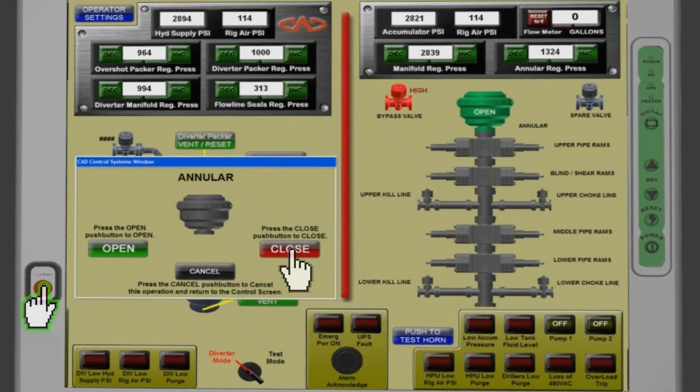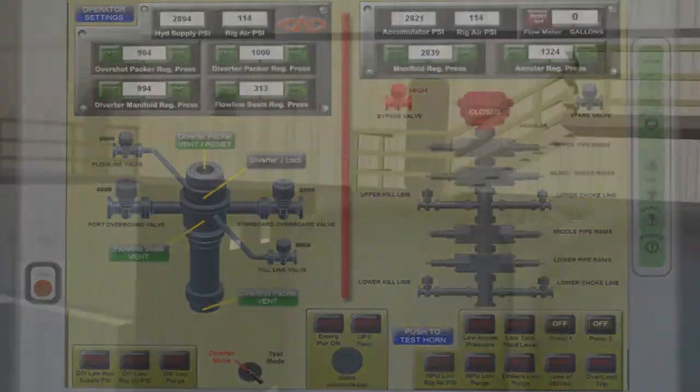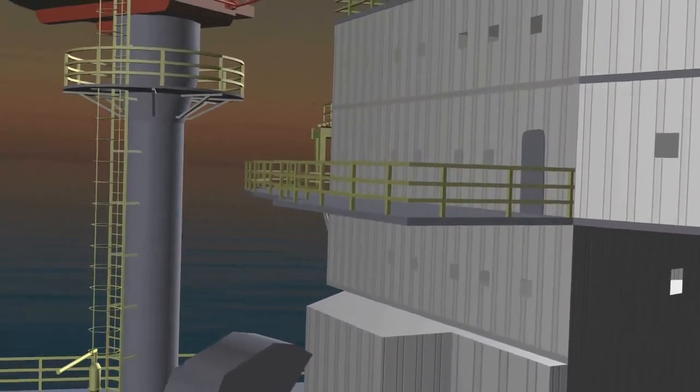The HMI also provides event logging capabilities. It records, timestamps, and archives each system event which can easily be downloaded or viewed. And they incorporate the two-handed operation safety feature to reduce the possibility of accidental function operation.